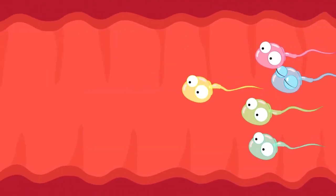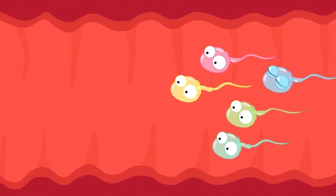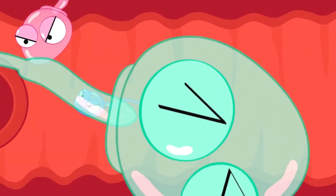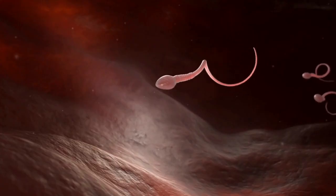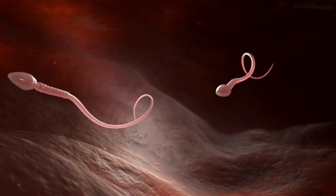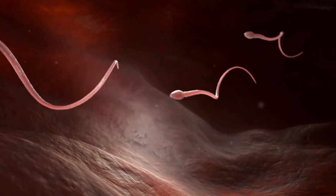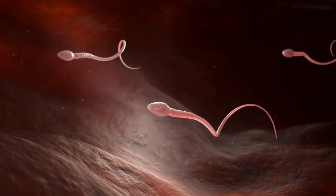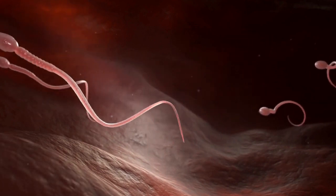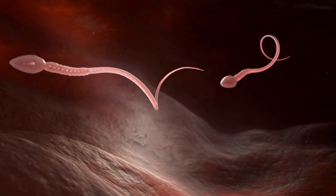Navigating the uterus and fallopian tubes. Inside the uterus, muscular contractions assist the sperm on their journey. However, the woman's immune system cells mistakenly identify the sperm as foreign invaders, leading to the destruction of thousands more. Half of the sperm head for the empty fallopian tube, while the other half swim toward the tube containing the unfertilized egg.